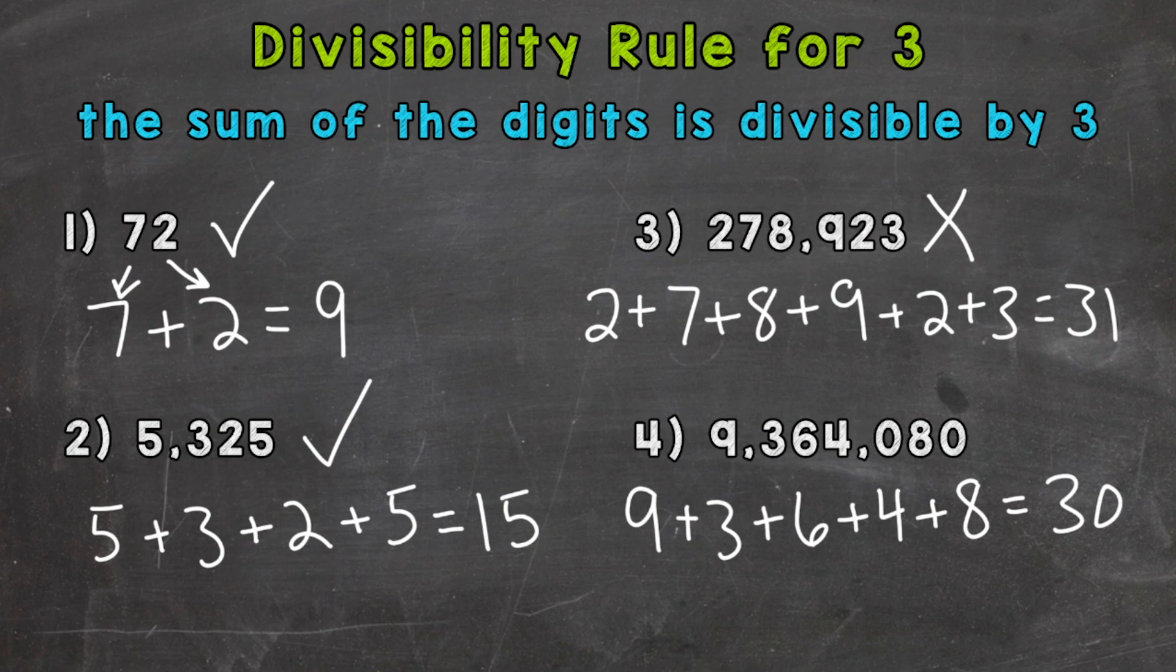because 30 divided by 3 is 10 and we do not get a remainder. So that means our original number 9,364,080 is divisible by 3 as well.